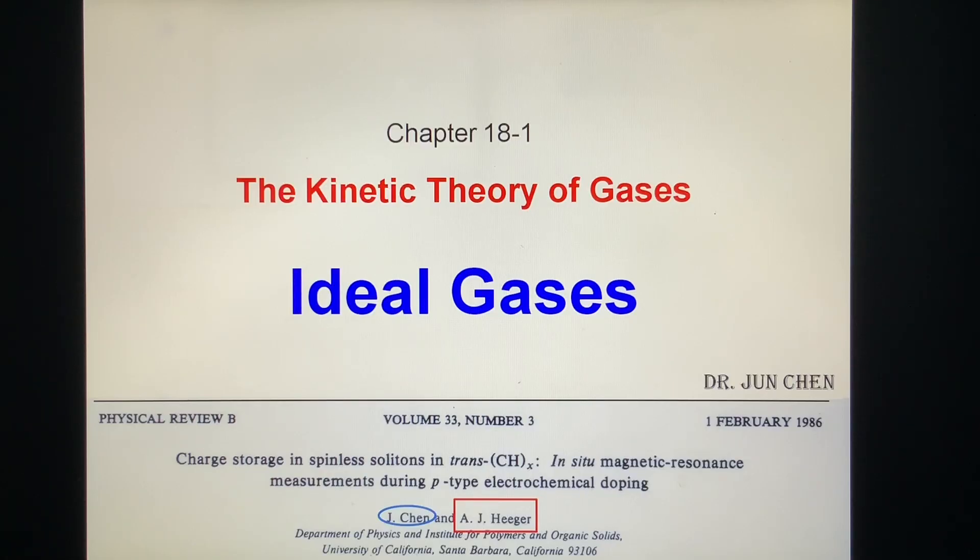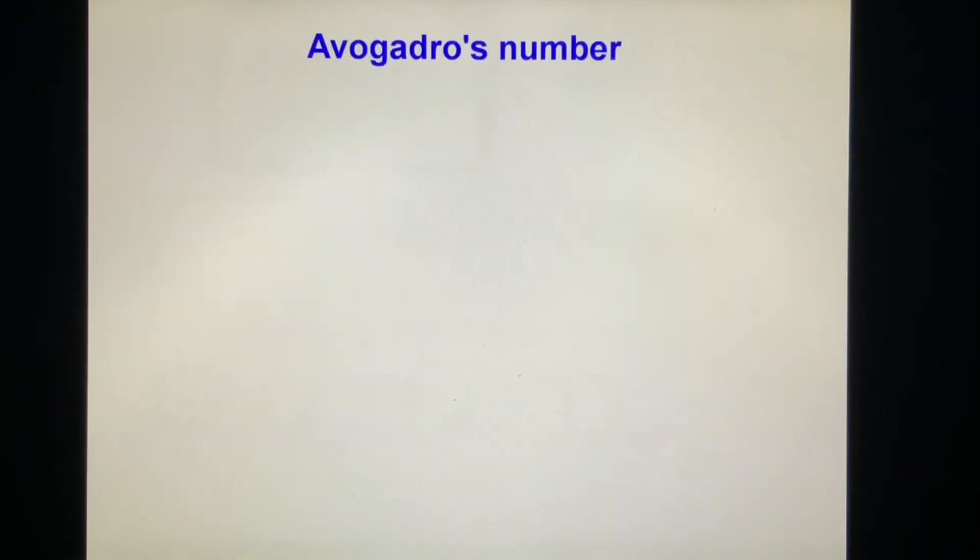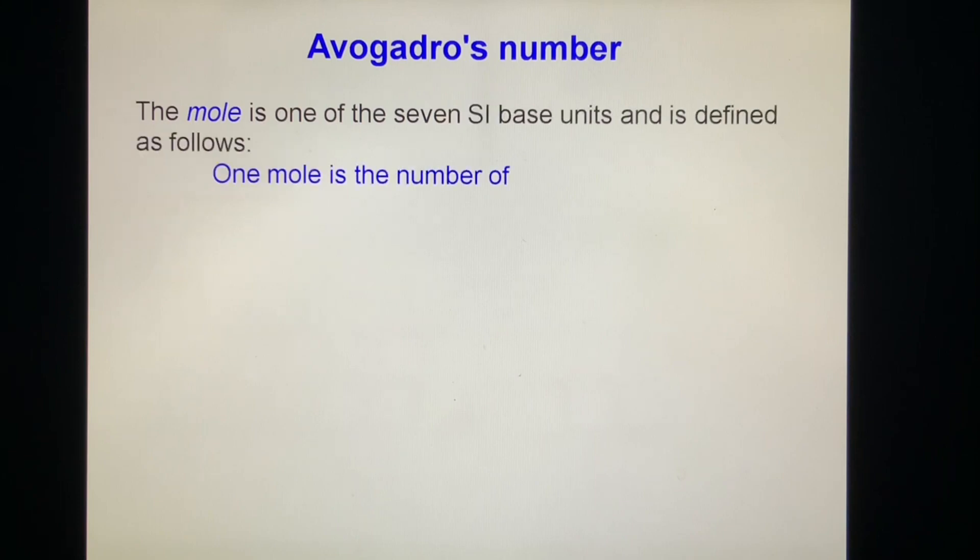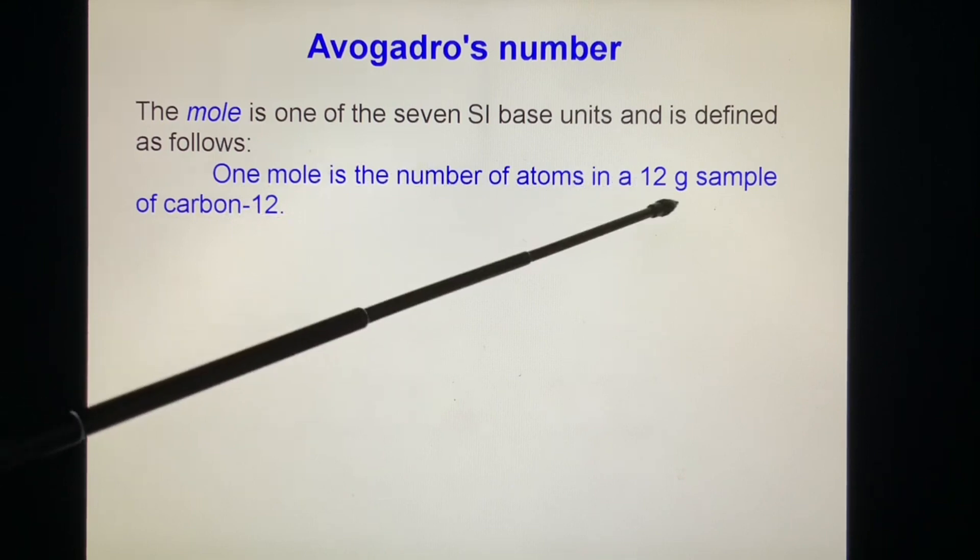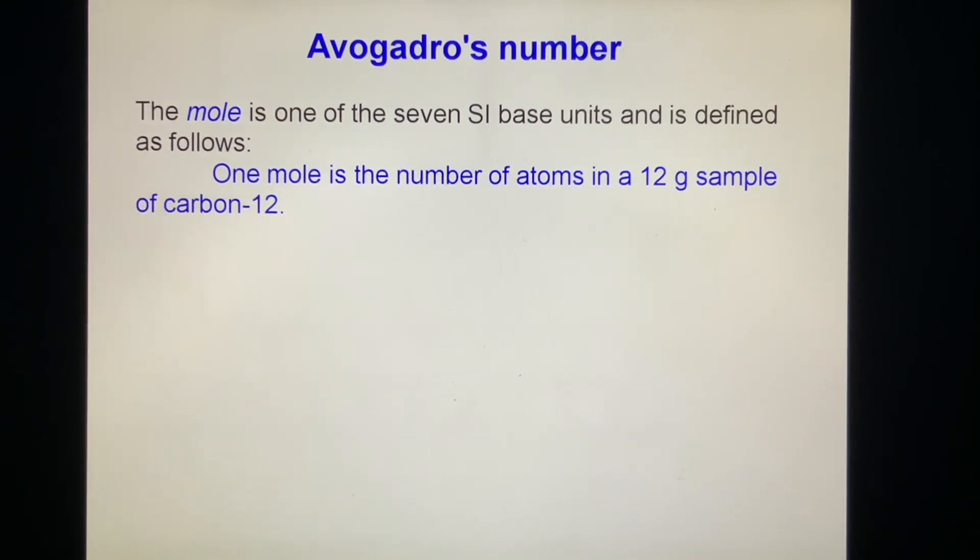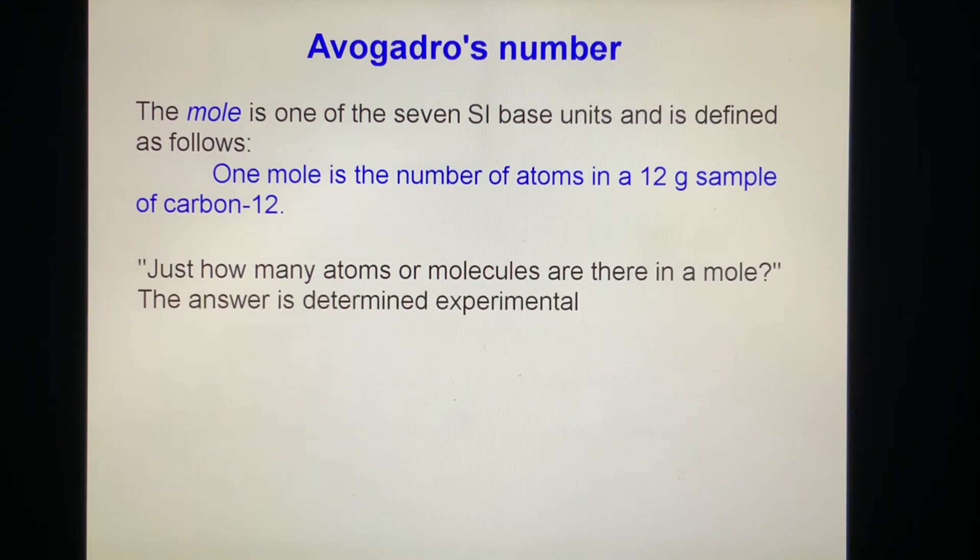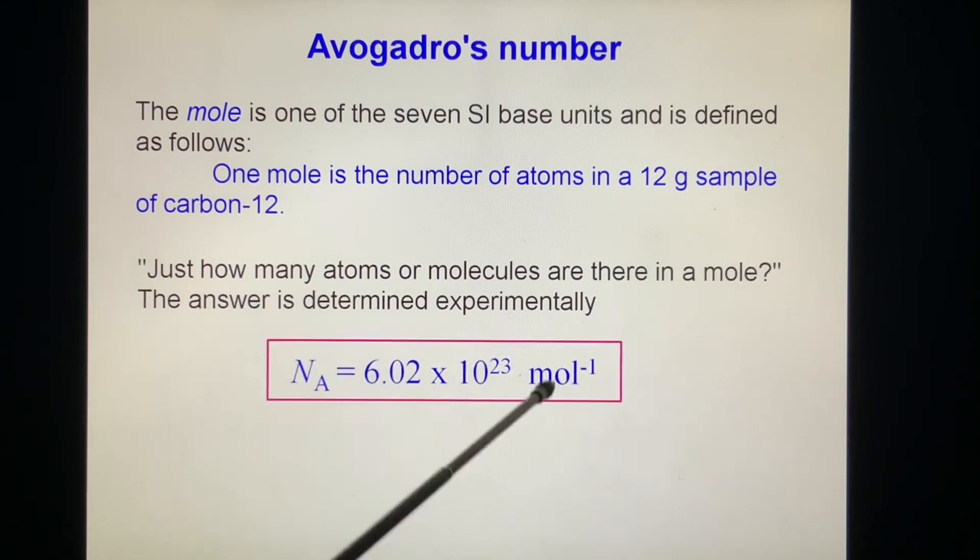Ideal gases. The mole is one of the seven metric system base units. It is defined as follows: one mole is the number of atoms in a 12 gram sample of carbon-12. Just how many atoms or molecules are there in a mole? The answer is determined experimentally. The number of Avogadro is 6.02 times 10 to the 23 per mole.